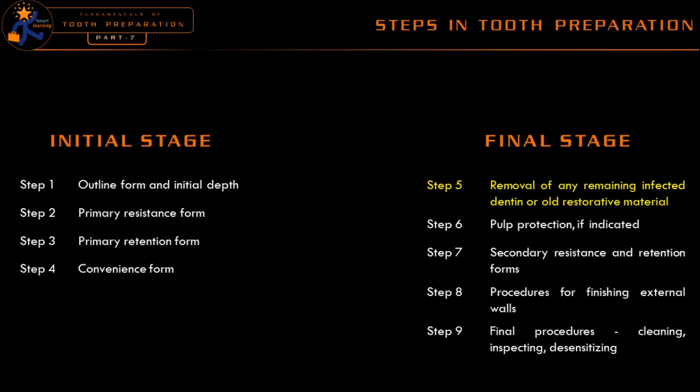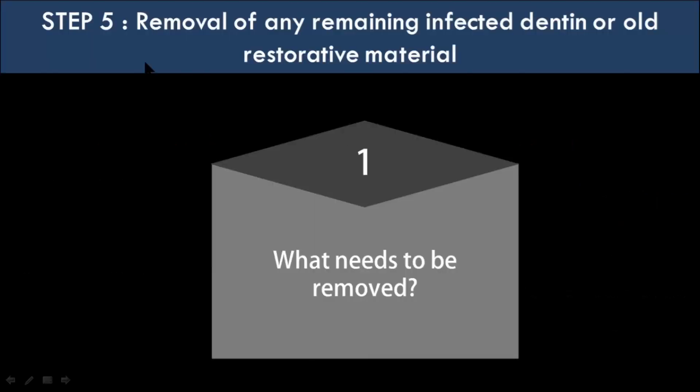As we know, tooth preparation can be divided into two stages: the initial stage and the final stage. We have already seen about the initial stage. Today we will move on to the final stage. The first step in the final stage is removal of any remaining infected dentine or old restorative material. Although the step states two different factors, if you look into the details we have to consider removal of three factors: removal of enamel pits and fissures, then infected dentine, and finally old restorative materials.